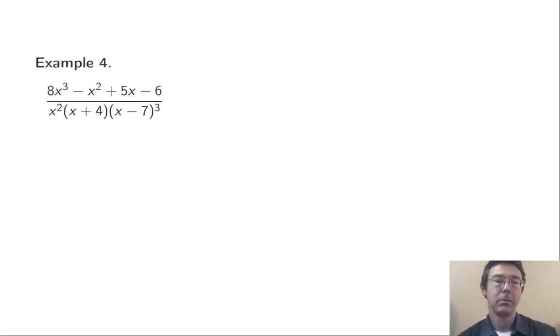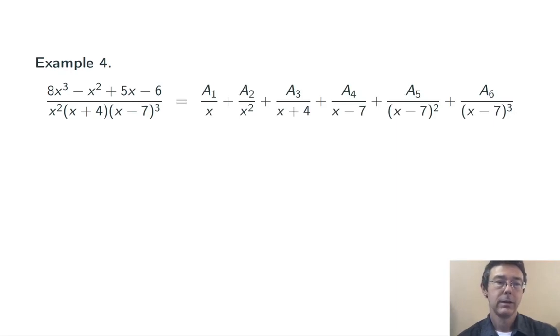One last problem. Again, let's just get the form of the decomposition and not actually go through and actually find all the coefficients. So I've got an x² term, so I need two terms for that. I need a constant over x and a constant over x². I have one (x + 4) term, so I just need a constant over (x + 4), a single term there.